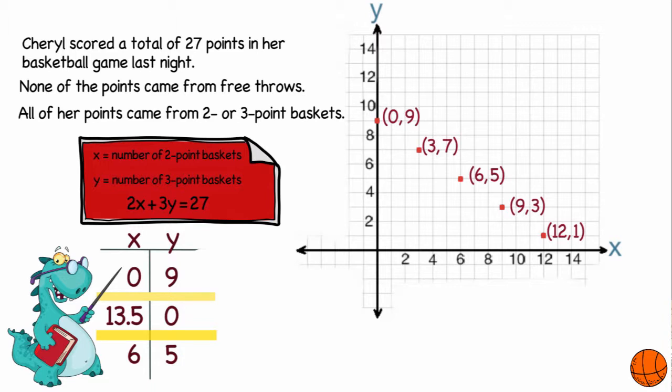So a couple of questions that could have been asked about Cheryl's scoring is what is the greatest number of three-point shots she may have made? And looking at our coordinates, the greatest y-coordinate for three-point shots would be nine. And what is the greatest number of two-point shots she may have made? The largest x-coordinate that's a whole number for us would be 12. Graph was very helpful. And that's it.